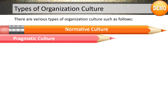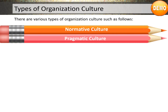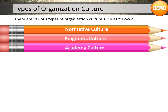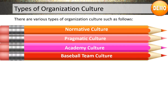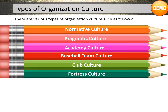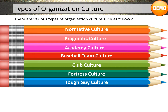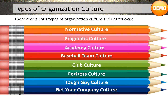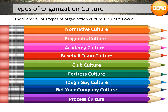The various types of organization cultures include: Normative, Pragmatic, Academy, Baseball Team, Club, Fortress, Tough Guy, Bet Your Company, and Process Culture. Let's look at each one of them in detail.